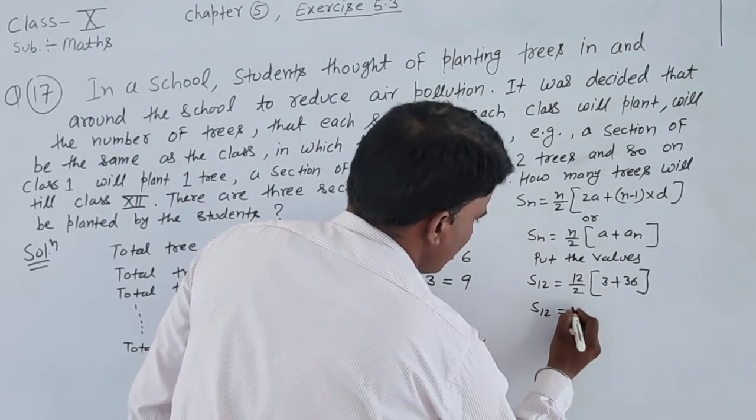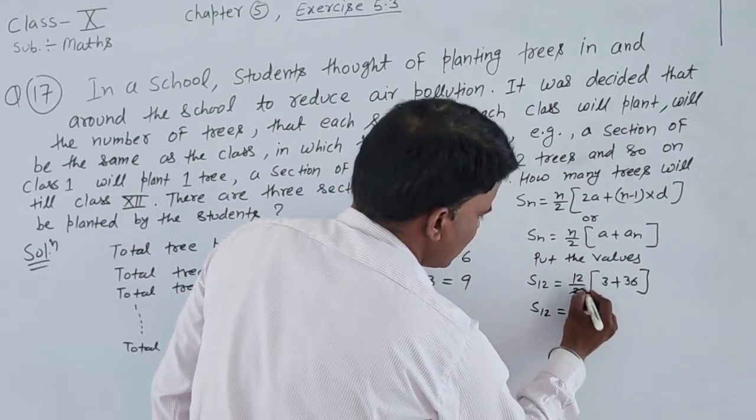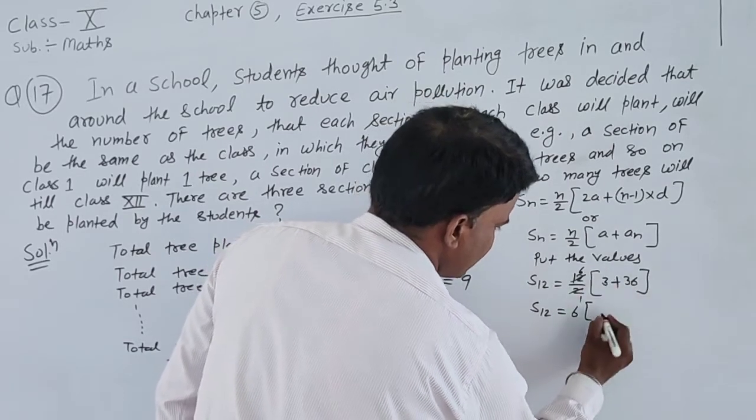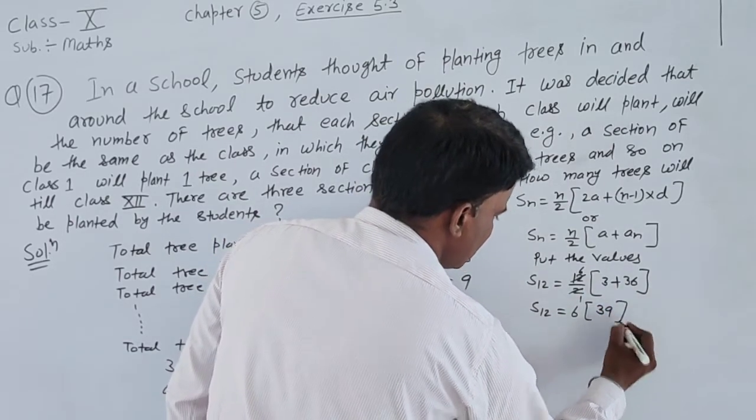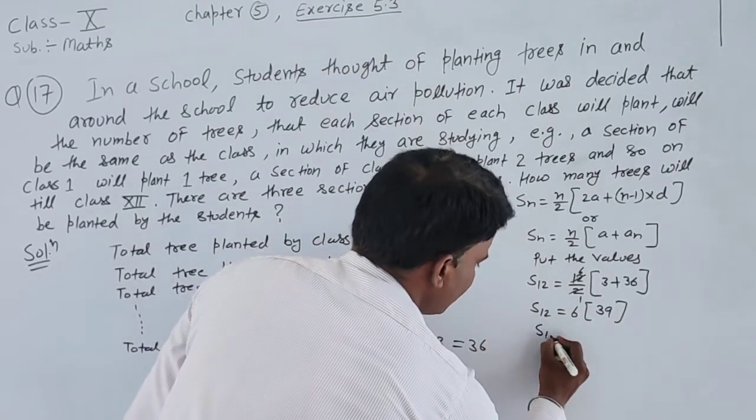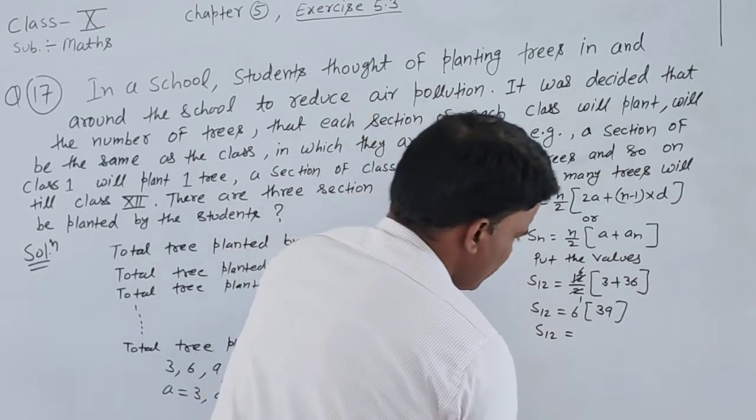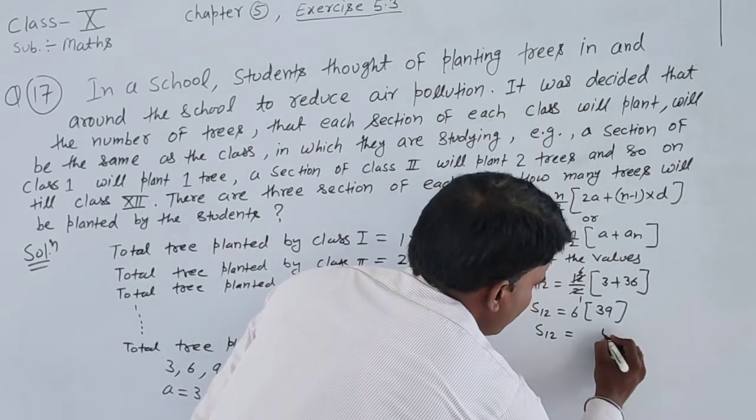Simplify: S_12 equals 12 by 2 times (36 plus 3) equals 6 times 39. Now multiply: 6 times 9 equals 54, carry 5.